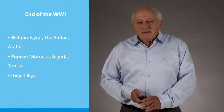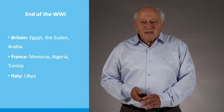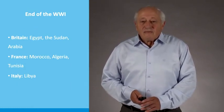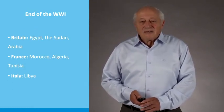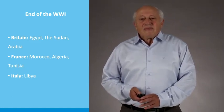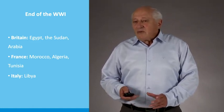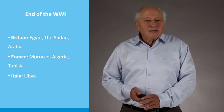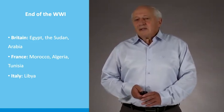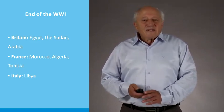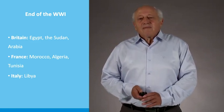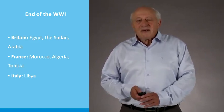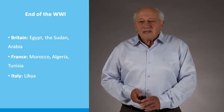As for the rest, Britain was in control of Egypt and the Sudan. Britain was also in control of Arabia under various degrees of British influence. The French were in North Africa — Morocco, Algeria, and Tunisia — well before the war: Algeria in 1830, Tunisia in 1881, and Morocco in 1912. Libya had been under the Italians since 1911.